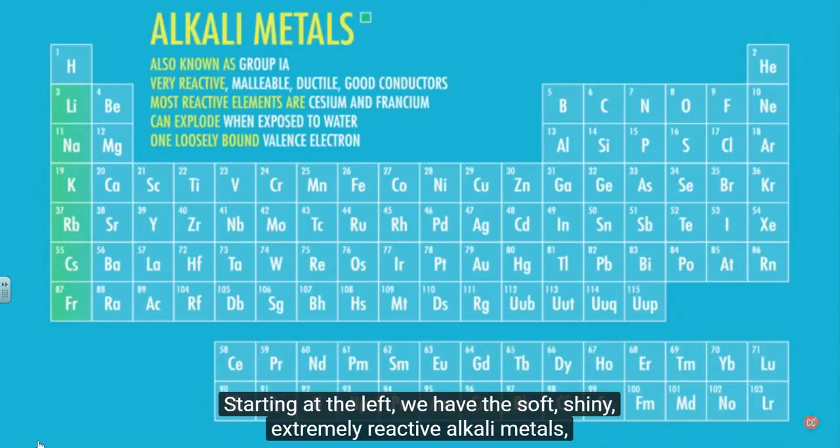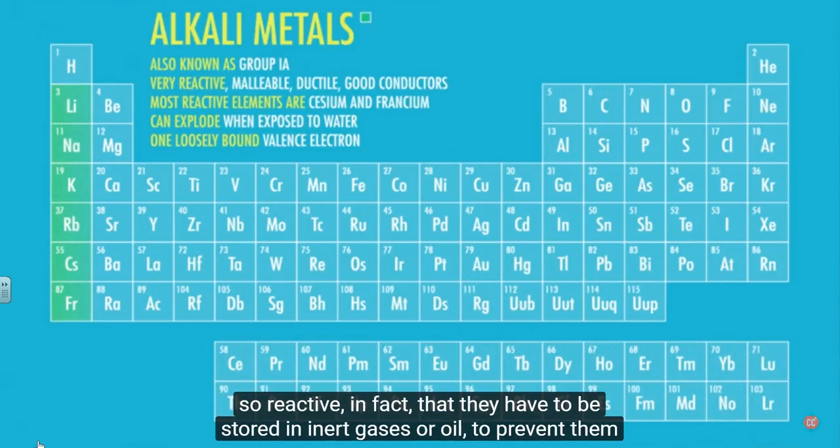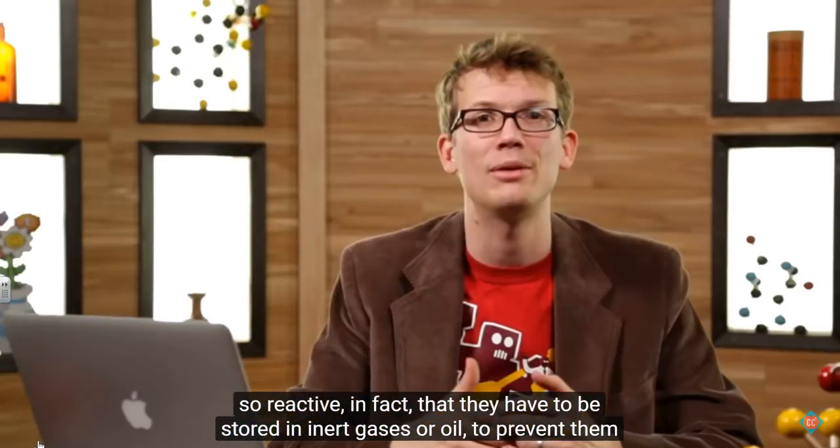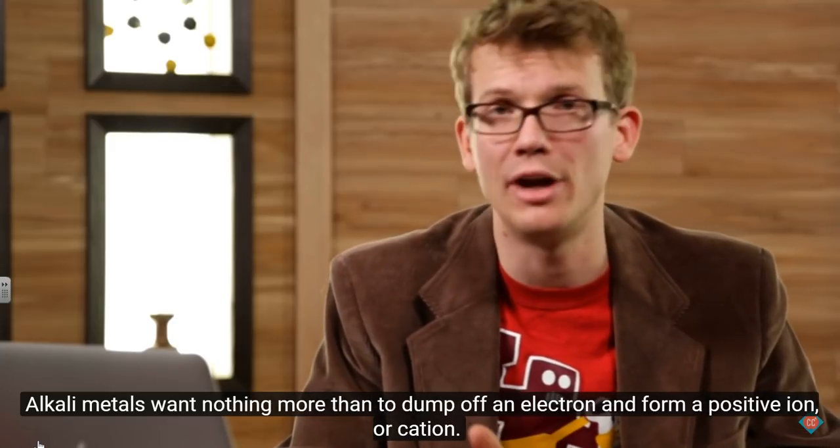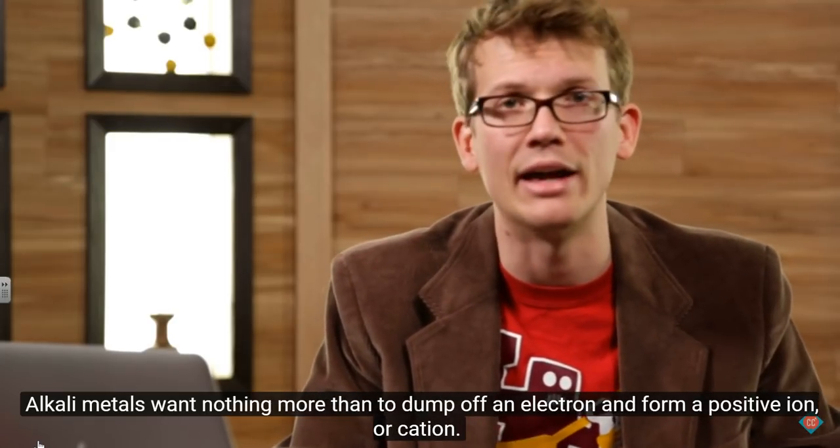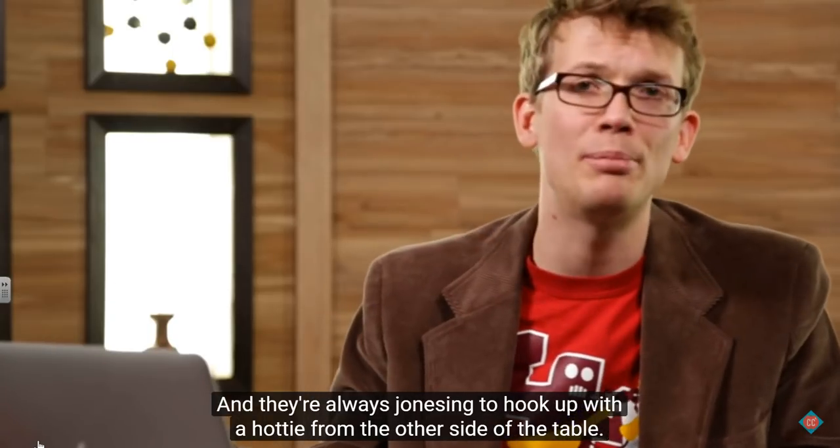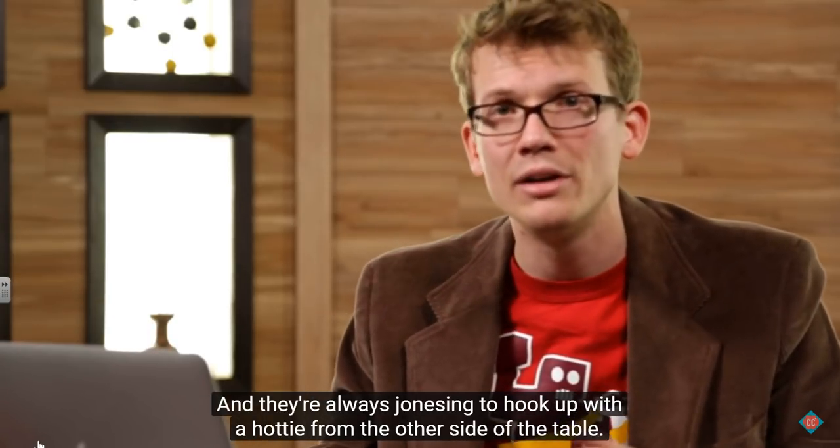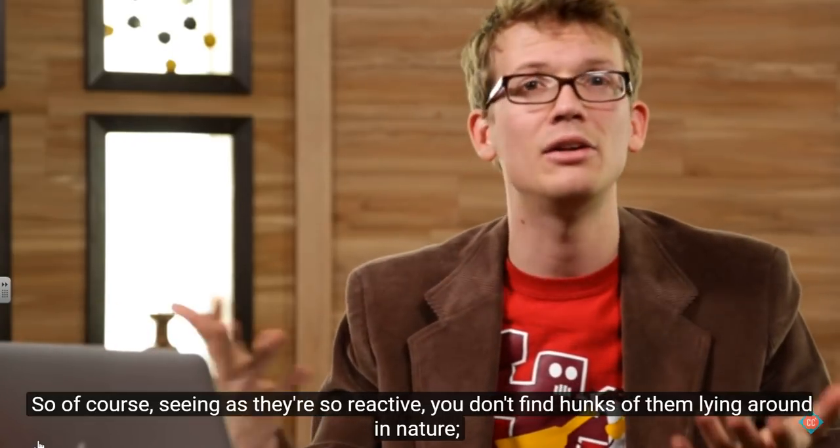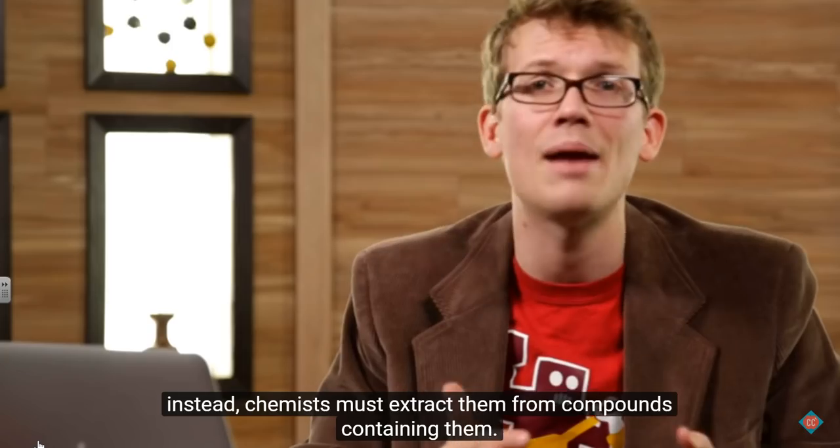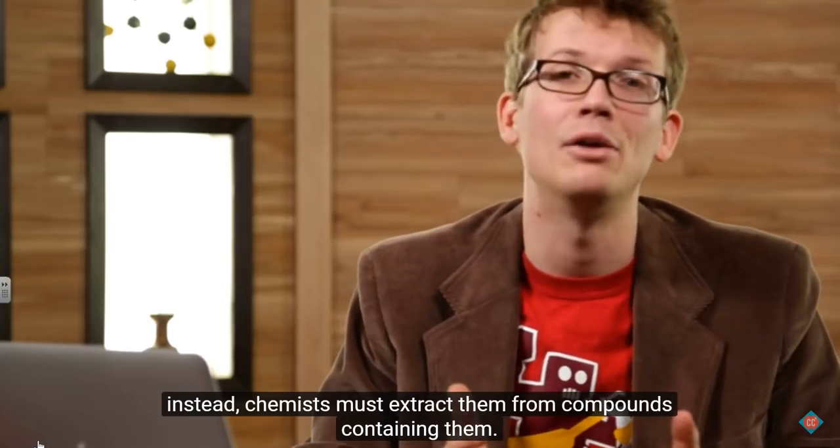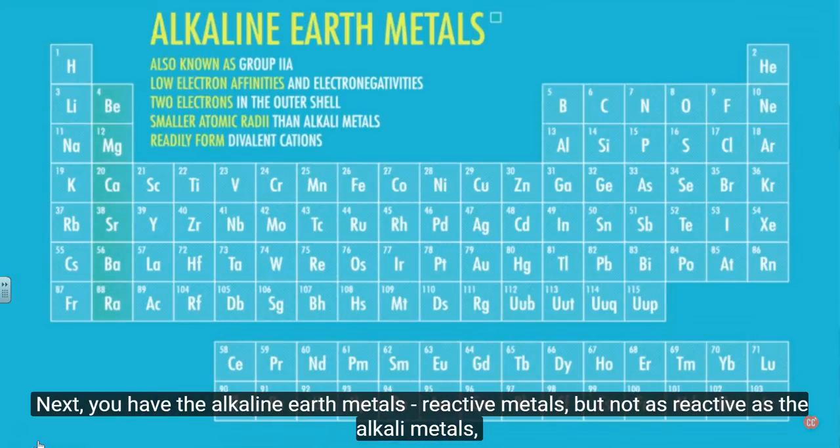The different groups Mendeleev had identified are a lot of the same groups that we study today. Starting at the left, we have the soft, shiny, extremely reactive alkali metals. So reactive, in fact, that they have to be stored in inert gases or oil to prevent them from reacting with the atmosphere. Alkali metals want nothing more than to dump off an electron and form a positive ion or cation. And they're always jonesing to hook up with a hottie from the other side of the table. So, of course, seeing as they're so reactive, you don't find hunks of them lying around in nature. Instead, chemists must extract them from compounds containing them.